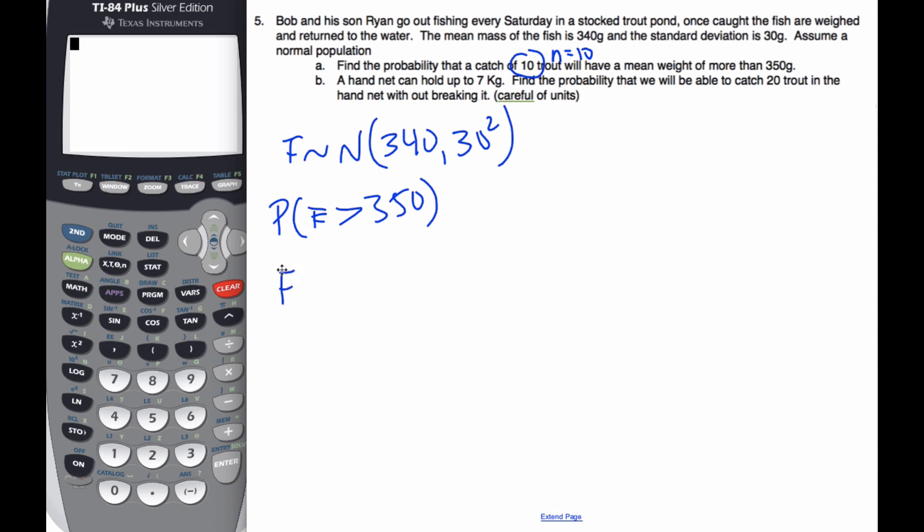F bar will be normal with a mean of 340. That's from the Central Limit Theorem. We know that this is the expected value of one fish, so the average of it should be the same. However, the variance or standard deviation is going to be the variance of the population divided by n, the sample size.